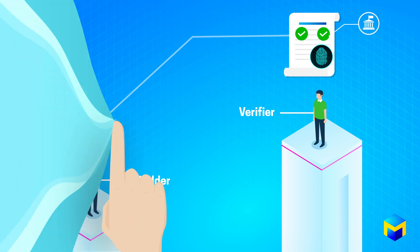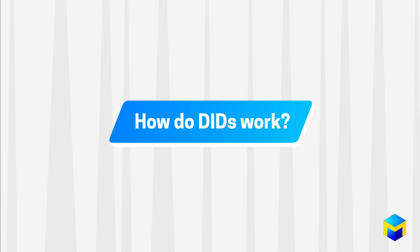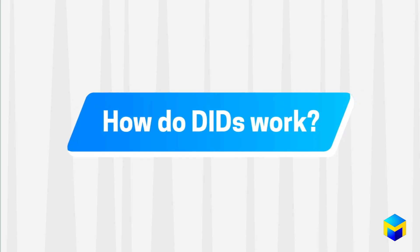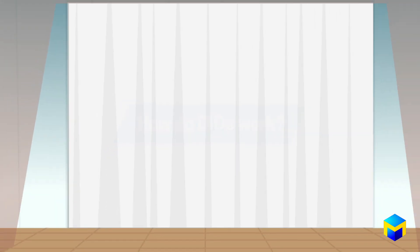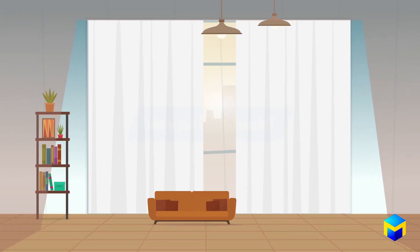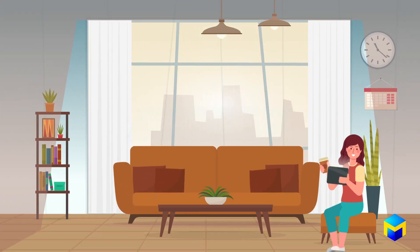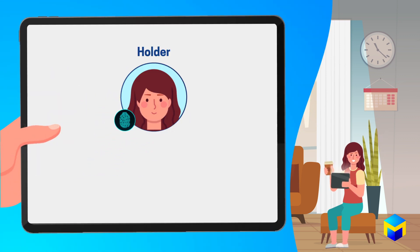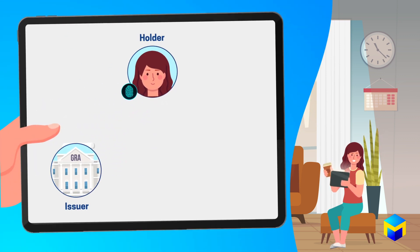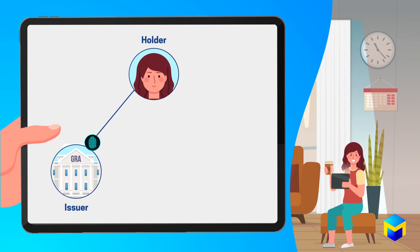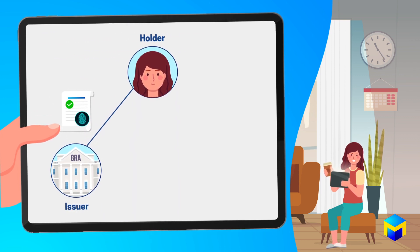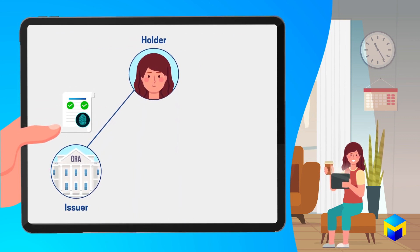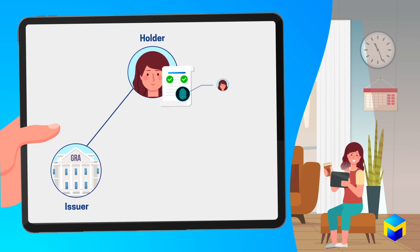So how do DIDs work in the real world? Say, for example, that you want to rent a car from a rental company, RentalCo. First, you must present your DID to the Government Registration Authority, or GRA, to obtain a VC which attests to the fact that you are the owner of a valid driver's license.